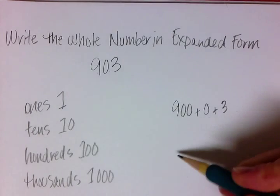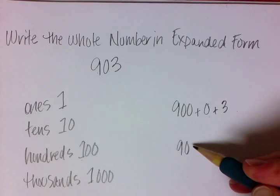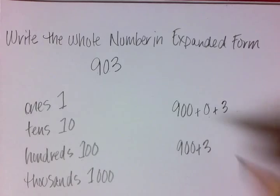So what it's asking us to do in the expanded form is write 900 plus 3. And that is the answer. Thank you.